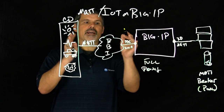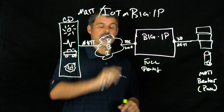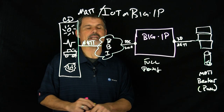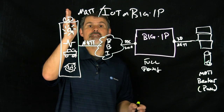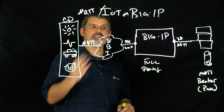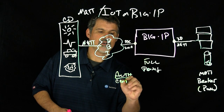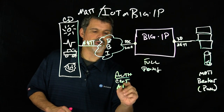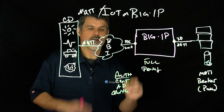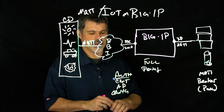So traffic comes in and we terminate SSL right here on the outside interface, terminating the encrypted traffic. On top of that, from a security standpoint, we can authenticate these devices. MQTT does support authentication — in this scenario we can do certificate-based authentication, Active Directory, or OAuth to at least ensure and verify that these devices are who they say they are.